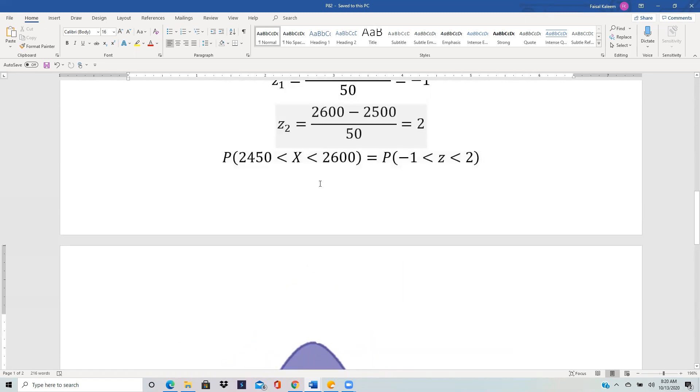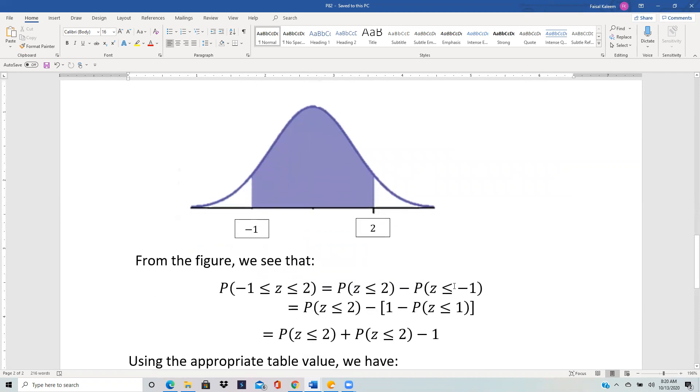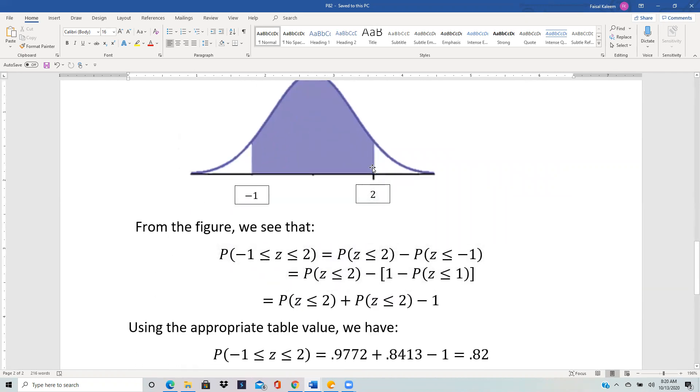And it doesn't matter whether you have less than or less than or equal to, since we are treating it as a normal distribution, which is continuous. And so between negative 1 and 2 is the same as the greater than negative 1, which is over here. And the greater than 1 is the same as 1 minus less than equal to 1.